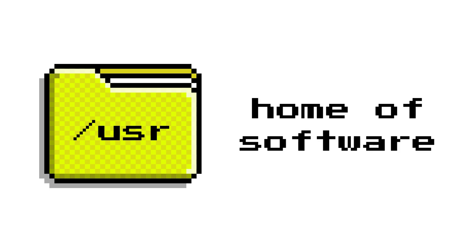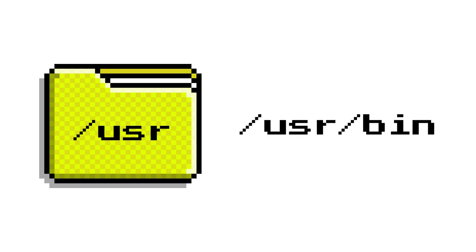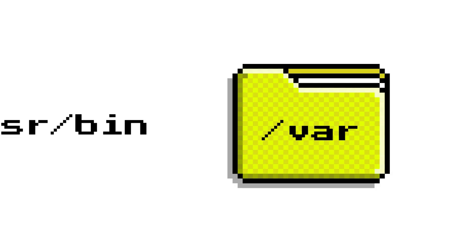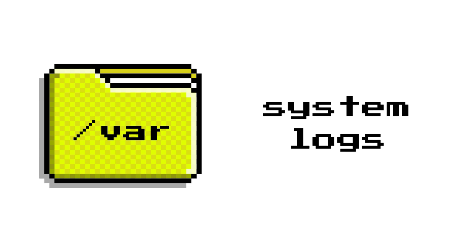Slash tmp is where temporary files go. Programs use it for short-lived data, and it's usually cleared automatically. Slash usr is where most installed software and their libraries live. For example, slash usr slash bin contains the majority of your commands. And finally, slash var stores data that constantly changes, like system logs in slash var slash log, caches, or mail spools.